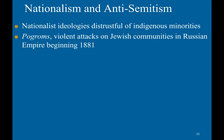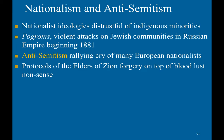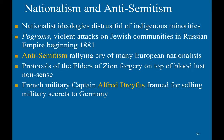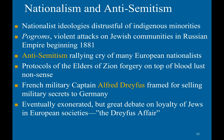Pogroms — violent attacks on Jewish communities — occurred in the Russian Empire beginning in 1881. Anti-Semitism became a rallying cry of many European nationalists, who spread fabrications such as the Protocols of the Elders of Zion forgery and blood libel nonsense. The Jewish French military Captain Alfred Dreyfus was framed for selling military secrets to Germany — he was completely innocent. He was eventually exonerated, but a great debate arose over the loyalty of Jews in European societies, becoming known as the Dreyfus Affair. It called into question the previous strategy of assimilation.